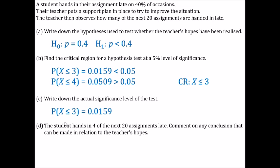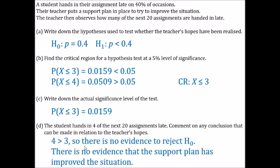The student hands in 4 of the next 20 assignments late, so our test statistic is 4. Is it in the critical region? The critical region is x less than or equal to 3, and we have x equals 4, so 4 is greater than 3 — there is no evidence to reject the null hypothesis because 4 is not in the critical region. In context: there is no evidence that the support plan has improved the situation.